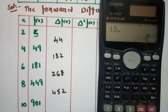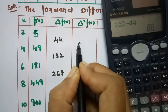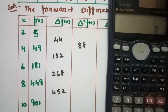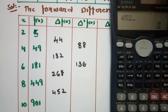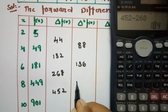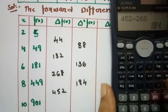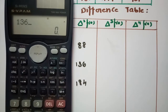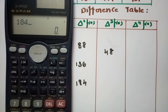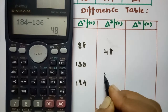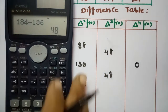The second differences are: 132 minus 44 is 88, 268 minus 132 is 136, and 452 minus 268 is 184. The third differences are: 136 minus 88 is 48, and 184 minus 136 is 48. The fourth difference is 48 minus 48, which is 0.